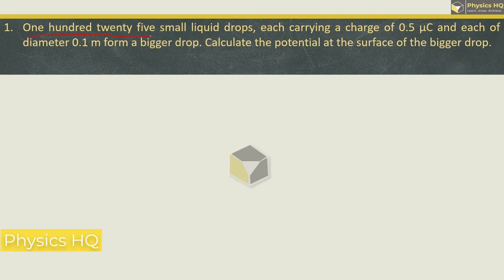125 small liquid drops each carrying a charge of 0.5 micro coulomb and each of diameter 0.1 meter form a bigger drop. Calculate the potential at the surface of the bigger drop.